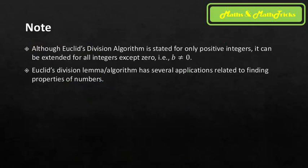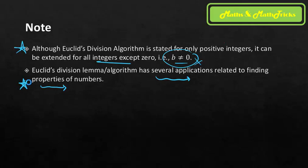Note: Euclid's Division Algorithm is stated in Grade 10 for positive integers only, but it can be extended to all integers except zero — the divisor must not be zero. For Grade 10 syllabus, we restrict it to positive integers. The algorithm also has several applications for finding properties of numbers, which is useful for CDS and Territorial Army exam aspirants answering questions on number properties.